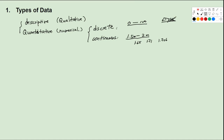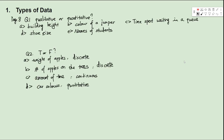Once we understand the classification of data, let's take a look at some exercise questions from the textbook, page 8, question 1. We want to know if the data is descriptive or numerical. Building height — we use numbers to represent height, so it's numerical or quantitative. Shoe size — sizes like 7, 8, 9 are numbers, so it's also numerical data.